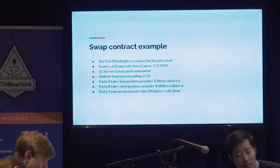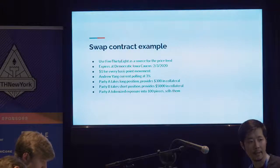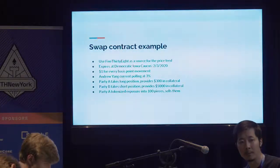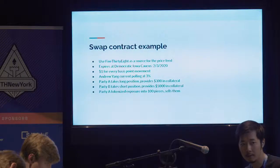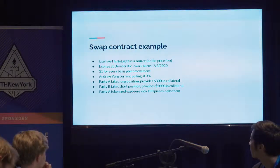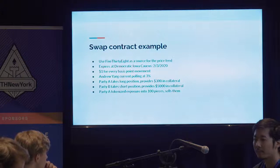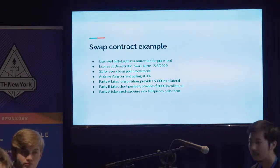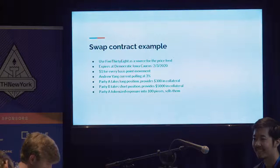The $5,000 collateral amount is arbitrary — it's based on how much you think the price could move. If the provided collateral was $1,000 but polling numbers went up to 15%, there isn't enough collateral to pay out the other side. Party B in theory is saying they put up $5,000 in collateral and their max gain is $300, because they're taking the short position and the polling numbers can only go down to zero. Party B would only do this if they think the risk-adjusted return makes sense.